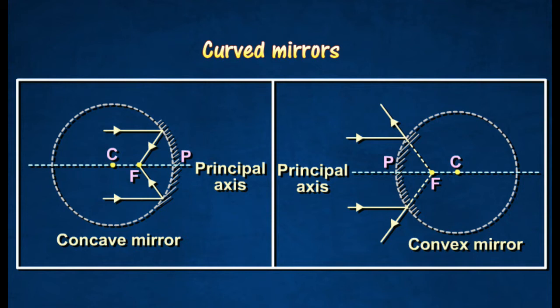Reflection of light rays by a curved mirror obeys the law of reflection. Concave mirrors have reflecting surfaces on the inner curved side, as shown in the diagram. Light rays parallel and close to the principal axis converge at a point F after reflecting from a concave mirror.